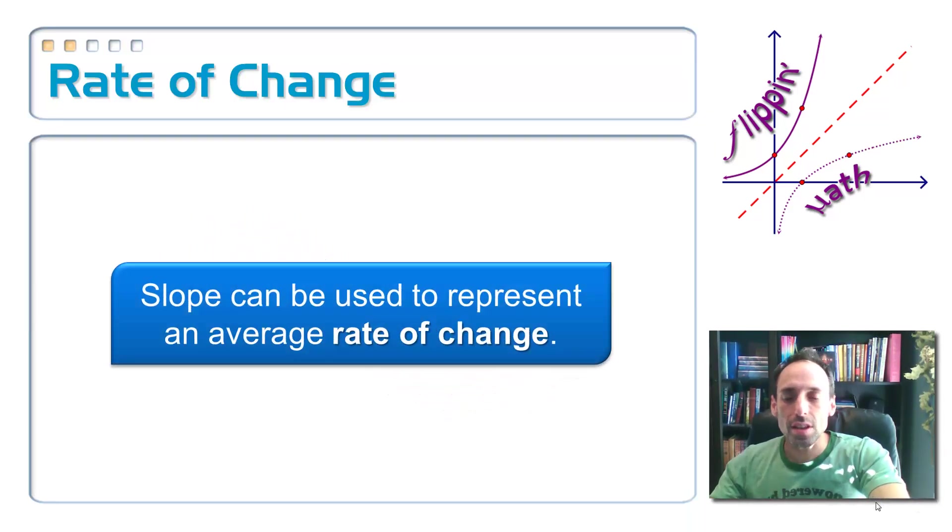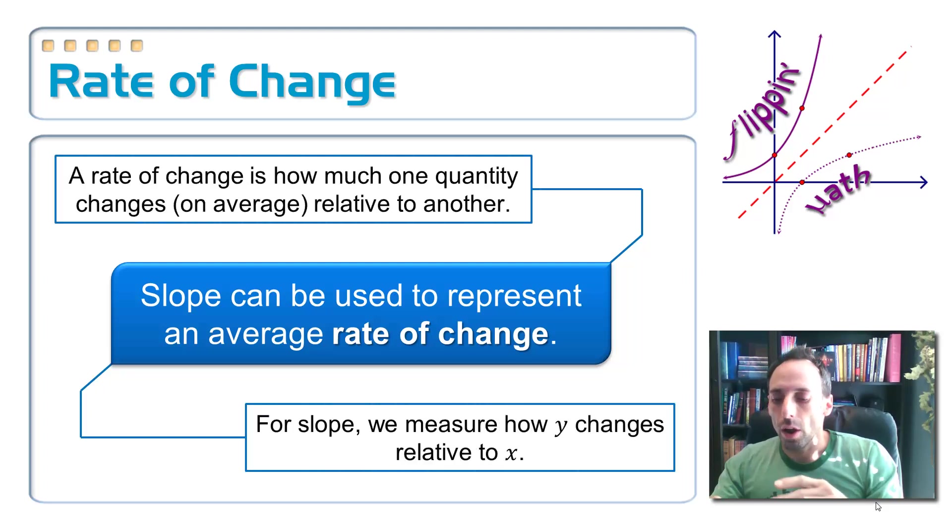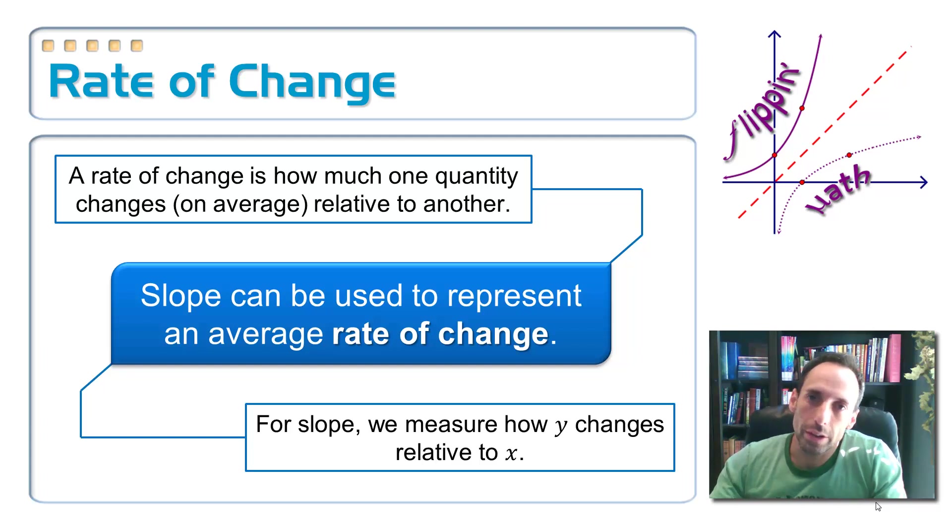So rate of change. Slope can be used to describe an average rate of change. What I'm talking about here is a rate of change is how much one quantity, usually it's an x value, well, in algebra it is, or a y value, how much it changes relative to another quantity. And now it doesn't have to be x's and y's. It could be just anything in the real world. It could be, say, for example, distance versus time, something like that. How much one of those quantities is changing while the other one is changing. For slope, we always measure how much y changes relative to x. It's always y over x, rate of change.